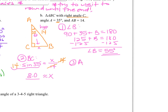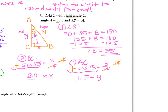The last side length we need is AC, which I'll label Y. Y is adjacent to angle A relative to the hypotenuse, so that's cosine: cosine 35 = Y/14. Multiplying both sides by 14: Y = 14 × cos 35. Plugging in, 14 × cos 35 ≈ 11.5. That's finding all missing parts — solving the triangle using the given information.